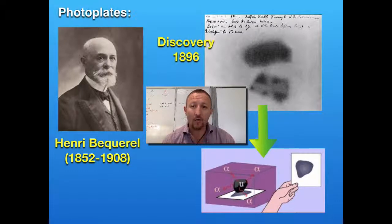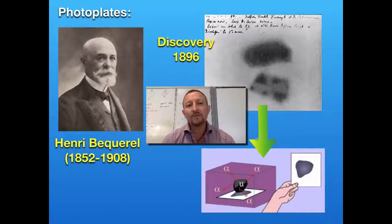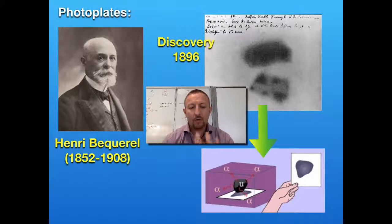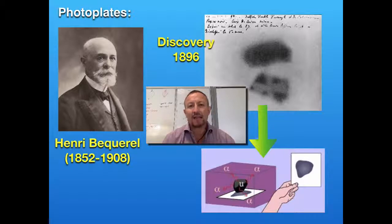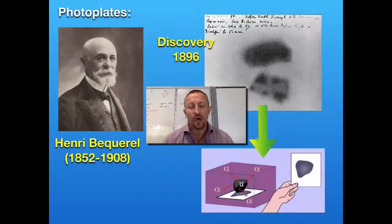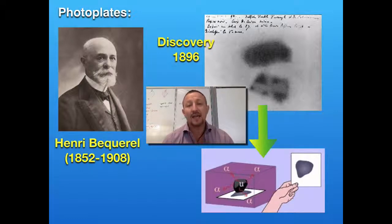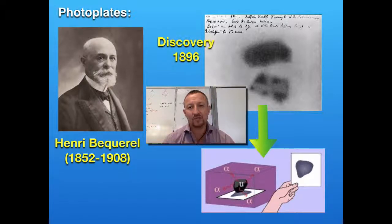He was working on the principle that the sunlight was causing the rock to emit some substance, and what he was getting was this shadow generated on the plate when he developed it. You can see that shadow in the top right hand corner of your screen. What he didn't realise was that what was being emitted from the rock was this radiation. It wasn't until he had a rainy day — he had a sample of the rock and a photo plate all set up — and because there was no sunlight, he put it in the drawer and went off for the weekend. He came back and for some unknown reason developed the plate, and noticed that same shadow was present.